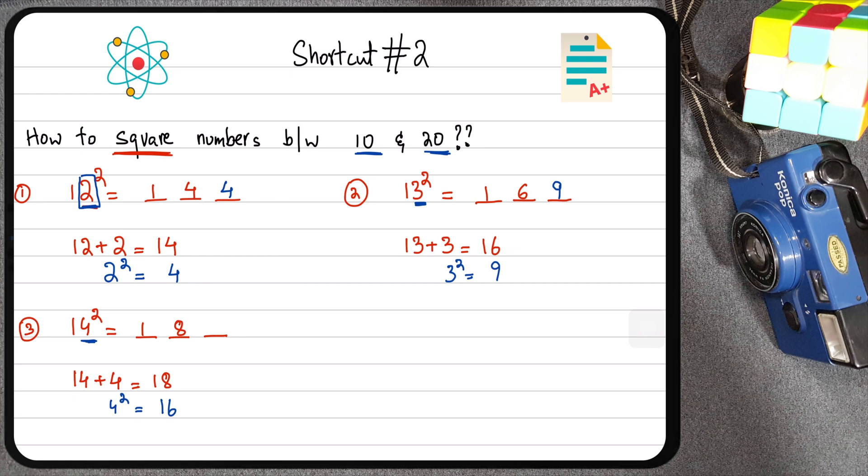Now, how am I going to place 16 here? Well, you're going to write 6 here and then you're going to carry the 1. So this is going to become 196. How did I get this 9? By adding 1 and 8. So 196 in this case is my final answer.